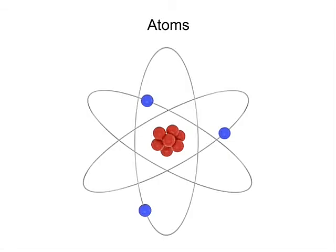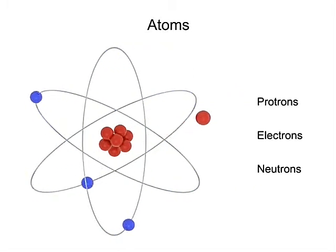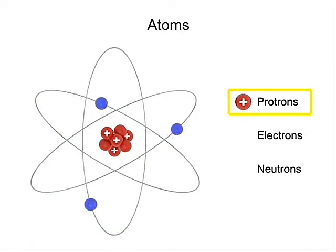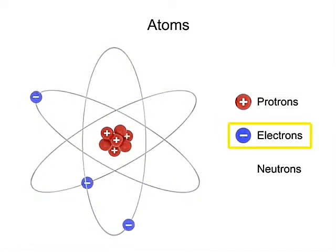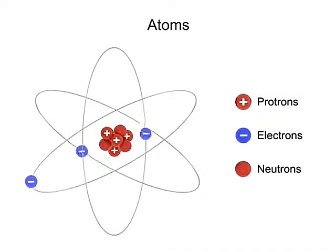Atoms make up all of the Earth's matter. Atoms can be broken down into three basic components: positively charged protons, negatively charged electrons, and neutrally charged neutrons.